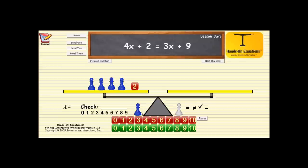On the other side I have three x's, so we will place three blue pawns, and then it says to add a nine, so we will add a cube with the number nine. So this is the physical representation for this equation.